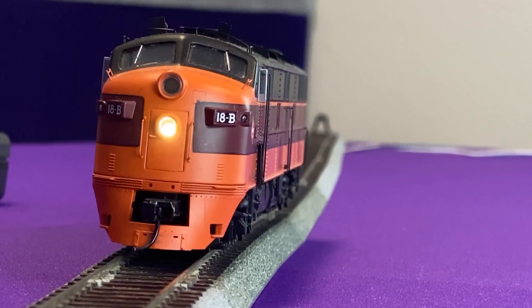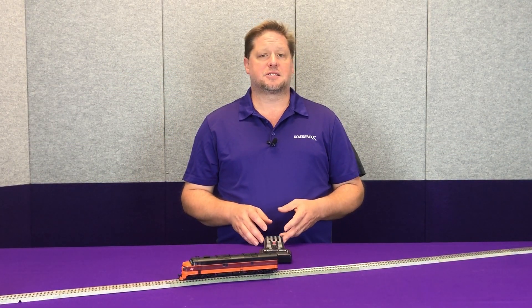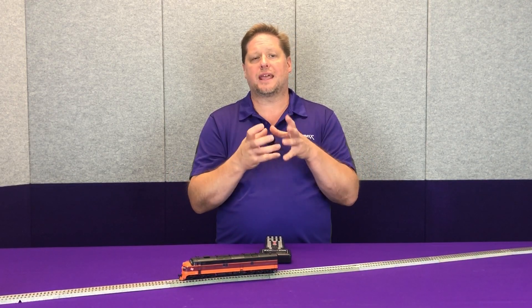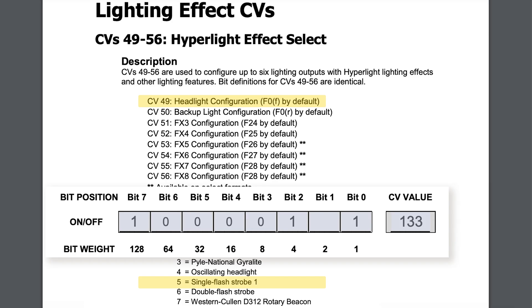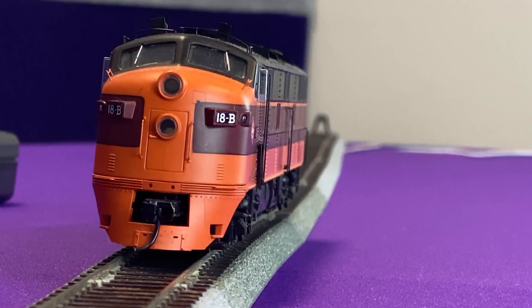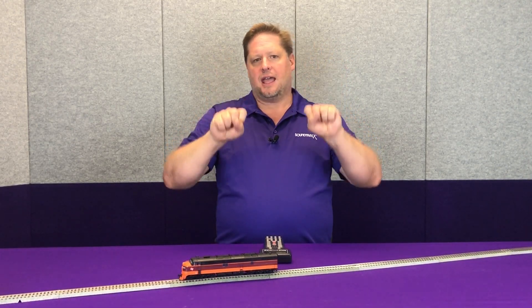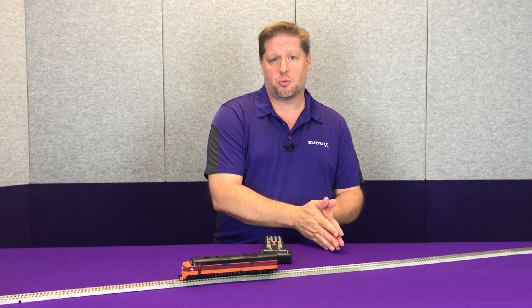Some of the other effects we have are the single pulse strobe. A single pulse strobe uses gases inside the strobe with electrons flowing through, and when they reach a certain state they emit a flash of light. This pattern is somewhat irregular, which is why we have a second strobe light in the lighting effects. We're going to pick single pulse strobe, which is lighting effect number 5, by setting CV 49 to a value of 133. The other single pulse strobe — strobe 2 — is just a different lighting pattern, so if you had two strobe lights on top, you can have them appear to go in and out of sync with each other.